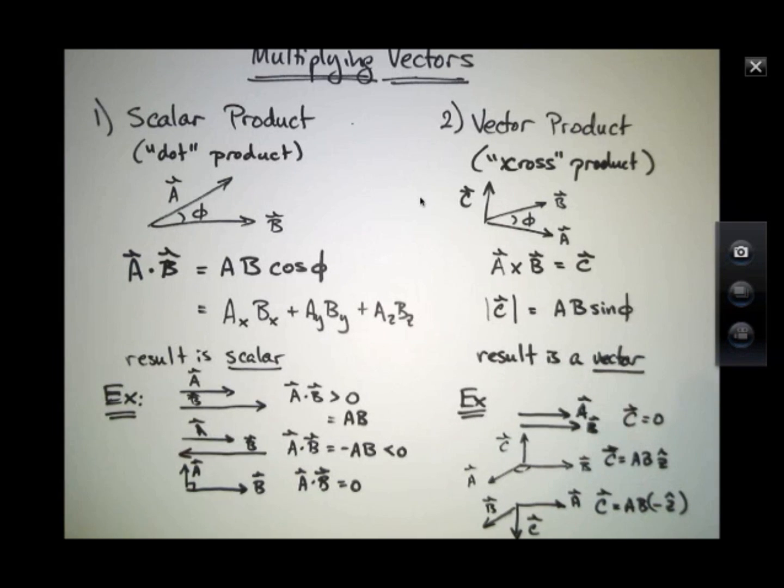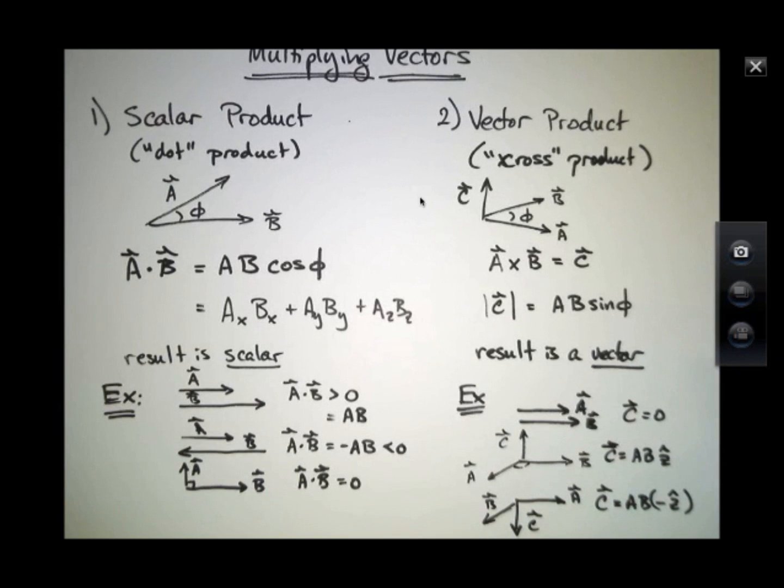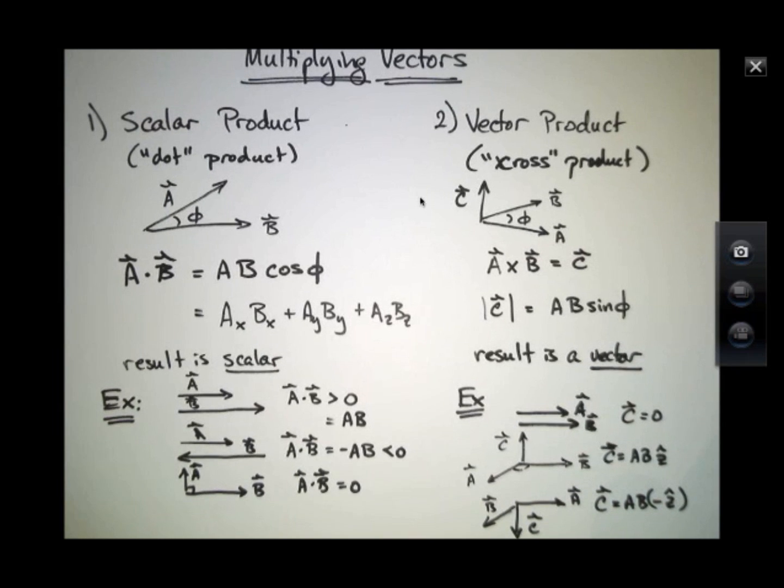And remember, since the vector product produces a vector result, I have to specify both a magnitude and a direction. So the scalar product produces a scalar result. I just need to tell you how to compute the magnitude of it. The vector product produces a vector and I have to tell you both how to produce the magnitude of that vector and the direction. So let's turn our attention to the direction.